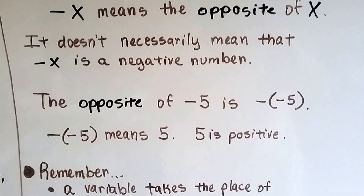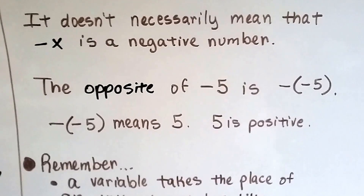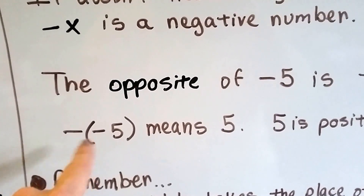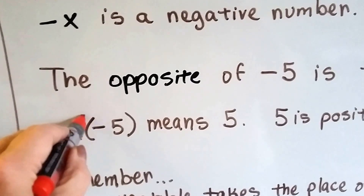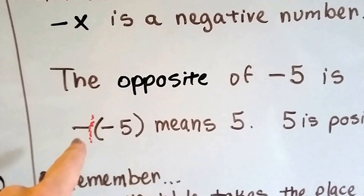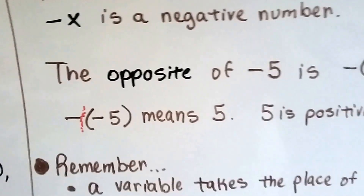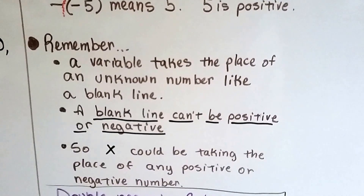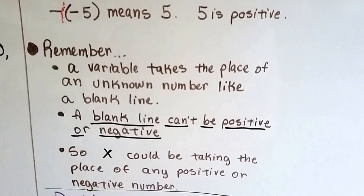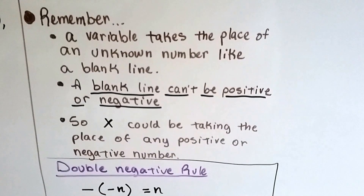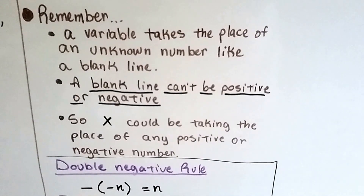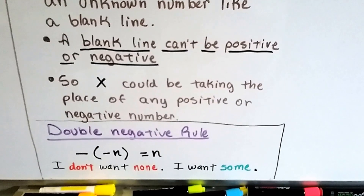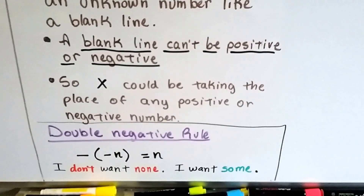I don't know if you remember about my invisible 1, but I talked about in 8th grade about when you see a negative sign in front of parentheses, there's actually our friend the invisible 1 hiding there. So you can actually say negative 1 times negative 5. Remember, a variable takes the place of an unknown number like a blank line. Think of that variable as a blank line — a blank line can't be positive or negative. It's just a blank line, and x could be taking the place of any positive or negative number.